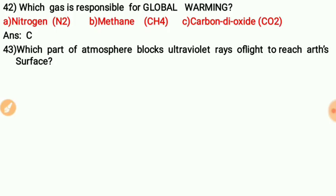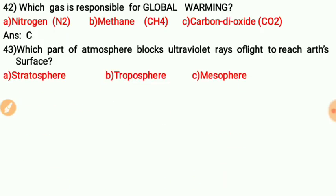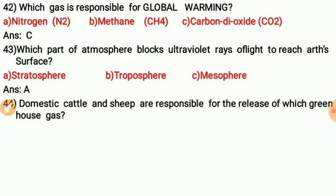Question forty-one: Which part of the atmosphere blocks ultraviolet rays from reaching the Earth's surface? The correct answer is A — stratosphere. The stratosphere blocks ultraviolet rays from reaching the Earth's surface.